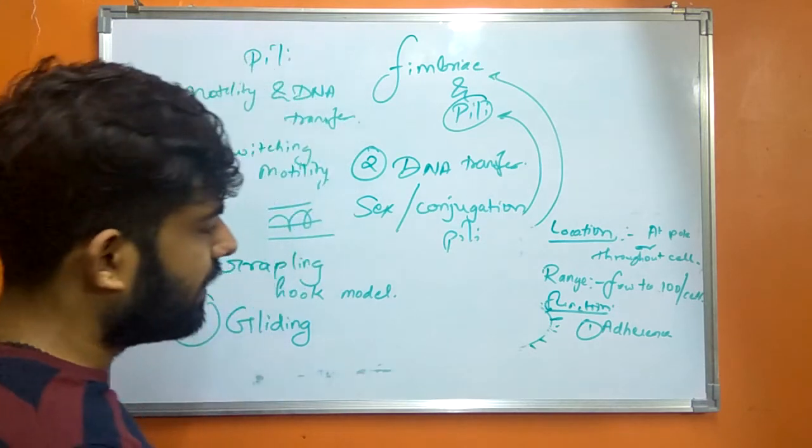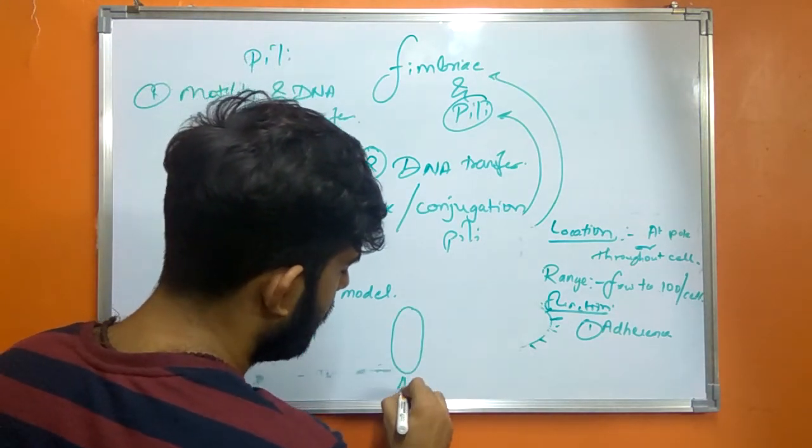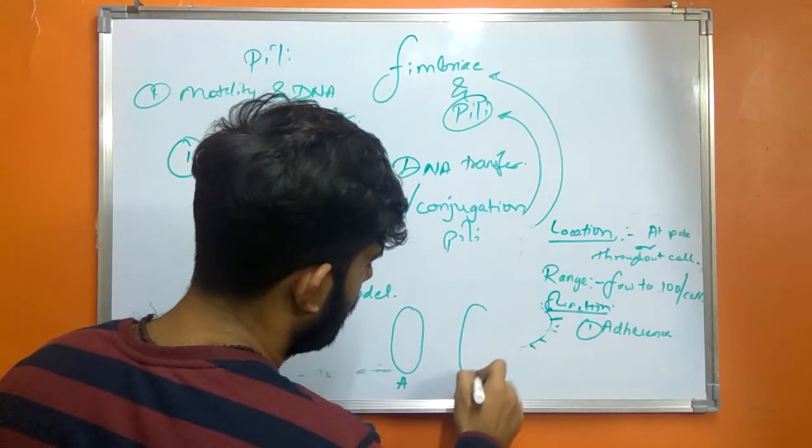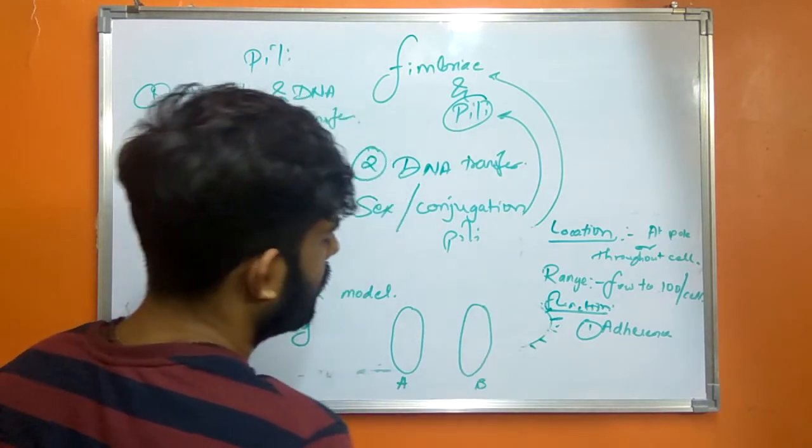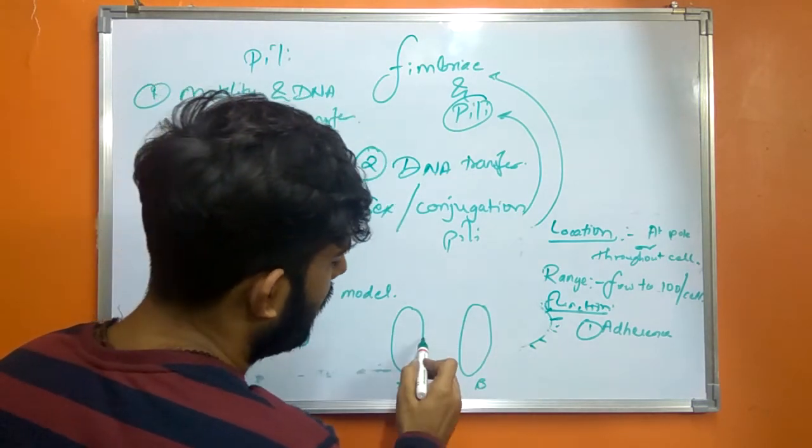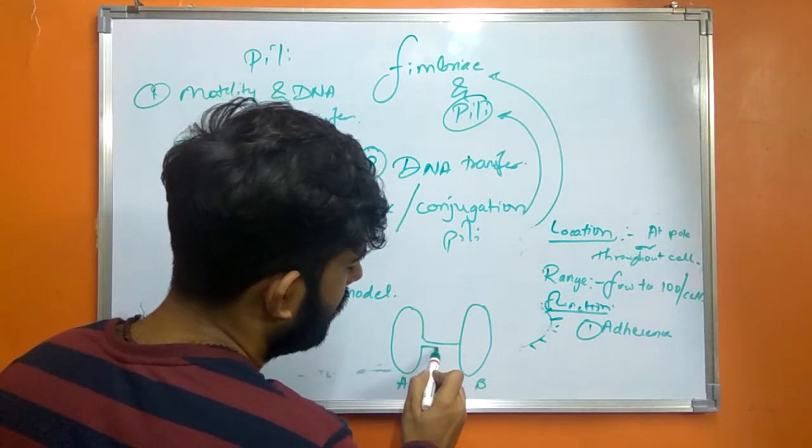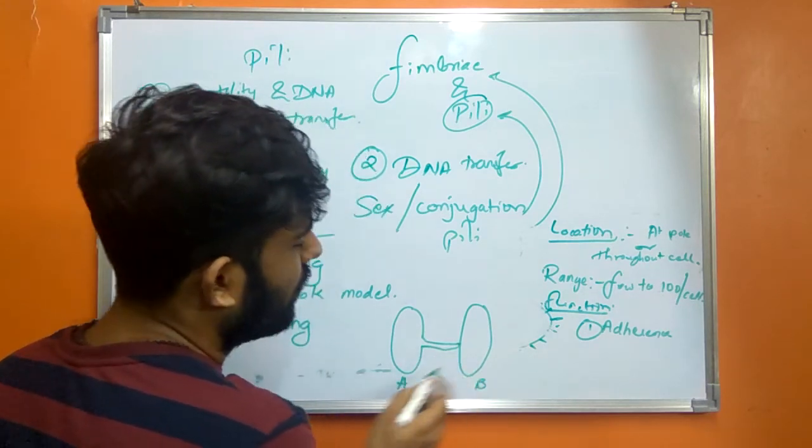So if I take a bacterium which is A and another bacterium which is B, the sex Pilli from this bacterium extends and attaches to the surface of B.